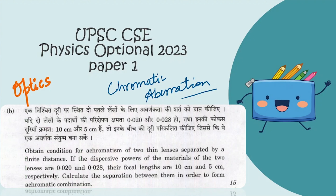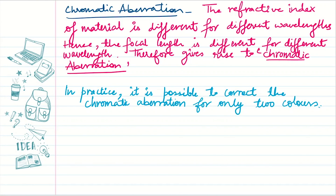This is a question from UPSC physics optional 2023 paper one. The question says we have to obtain the condition for achromatism of two thin lenses separated by a finite distance. Based on this condition, we are given a numerical where the dispersive powers of the materials of the two lenses are 0.02 and 0.028, and their focal lengths are 10 cm and 5 cm. We have to calculate the separation between them to form the achromatic combination.